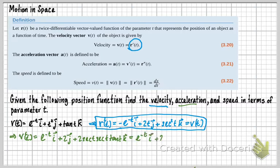So then I'm going to rewrite this now, because I can simplify this a little here. So that's going to be e to the negative t i, plus 2j, plus 2 secant squared t tan t k. So there's our a(t), and that's the acceleration. That's the second piece here.